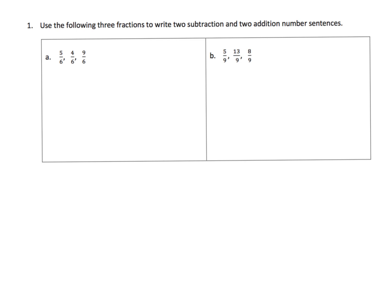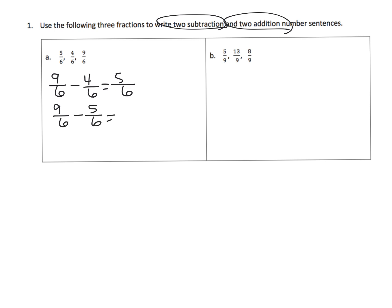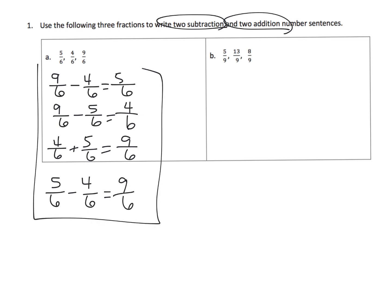With an eye towards addition and subtraction being complementary to one another, we're going to take our fractions and write two subtraction and two addition sentences. For problem A: 9 sixths minus 4 sixths equals 5 sixths, or 9 sixths minus 5 sixths equals 4 sixths. For addition: 4 sixths plus 5 sixths equals 9 sixths, or 5 sixths plus 4 sixths equals 9 sixths.